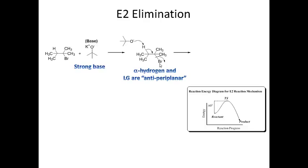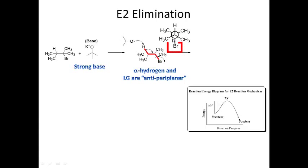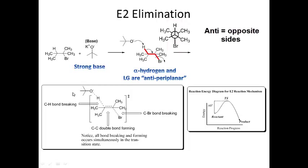Anti-periplanar means they are in the same plane but on different faces — the hydrogen is on the top side and the leaving group is on the bottom side. In a Newman projection, bromine is anti to the hydrogen, meaning they are on opposite sides. For E2 elimination to occur, the alpha hydrogen and the leaving group must be anti-periplanar. The transition state shows a partially formed oxygen-hydrogen bond, a partially broken carbon-hydrogen bond, a partially formed carbon-carbon pi bond, and a partially broken carbon-bromine bond.